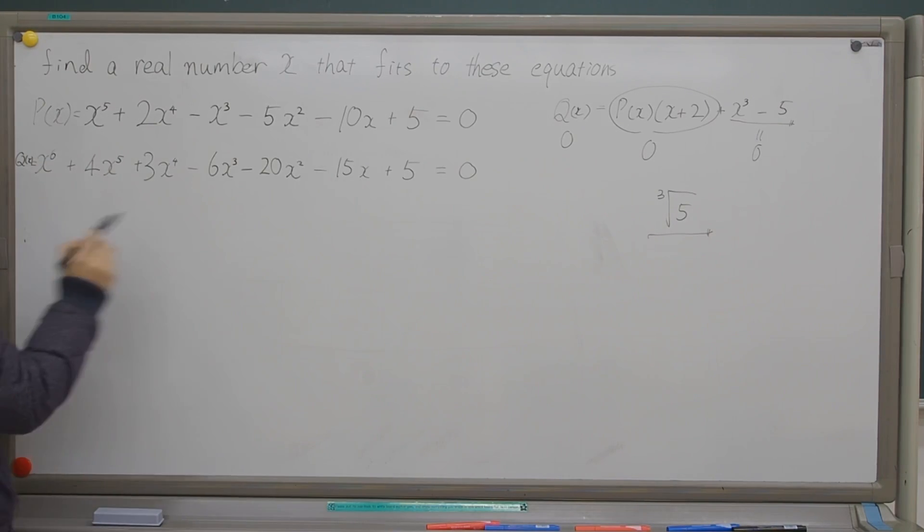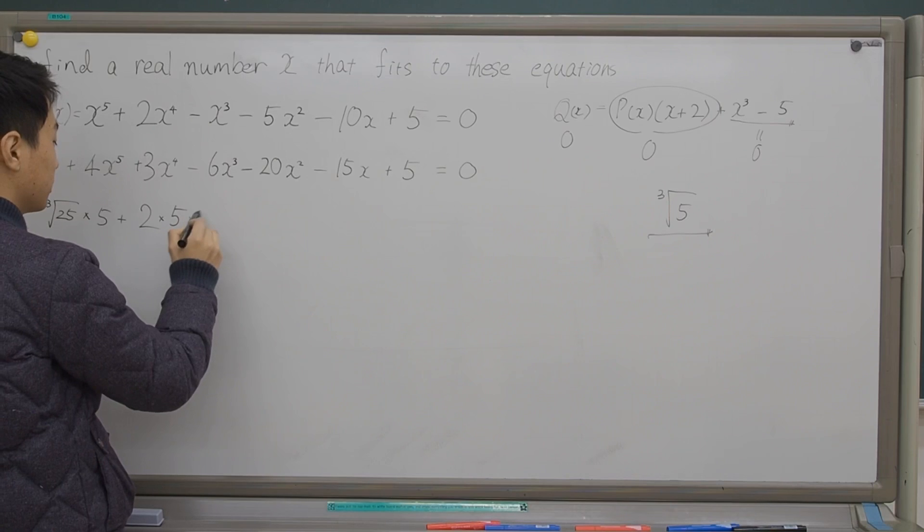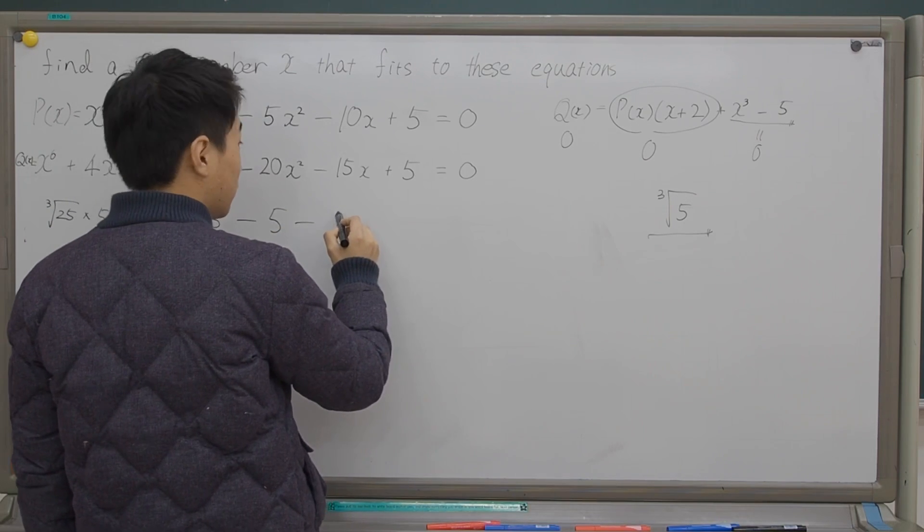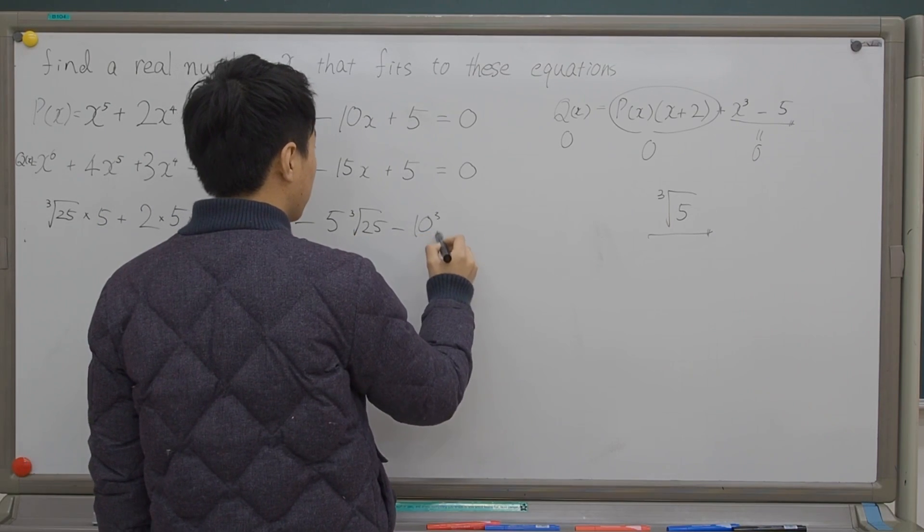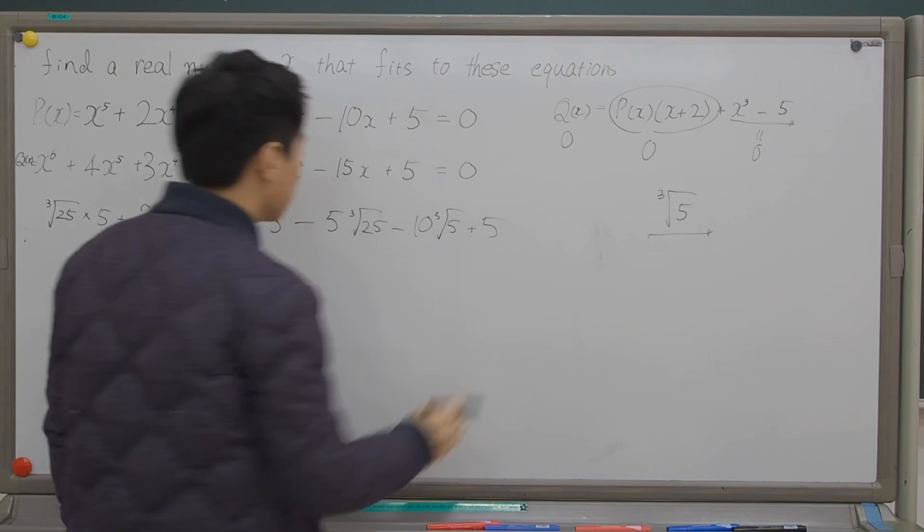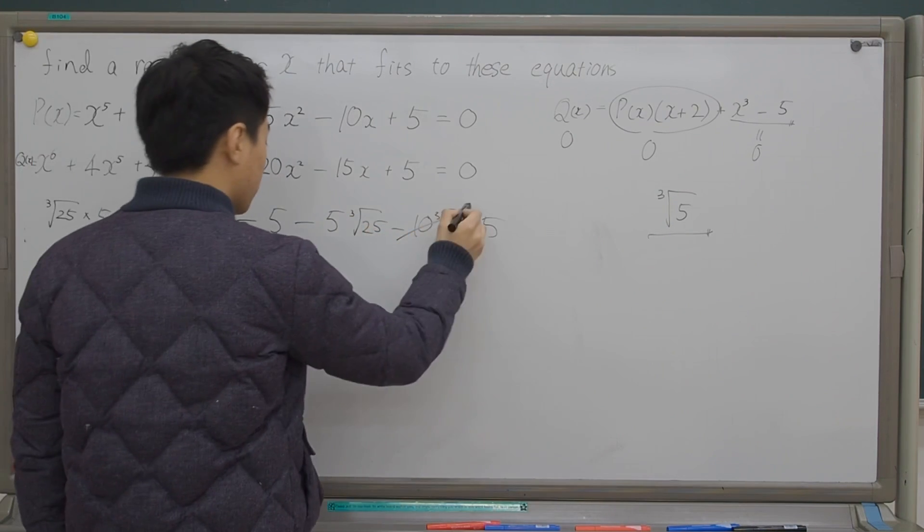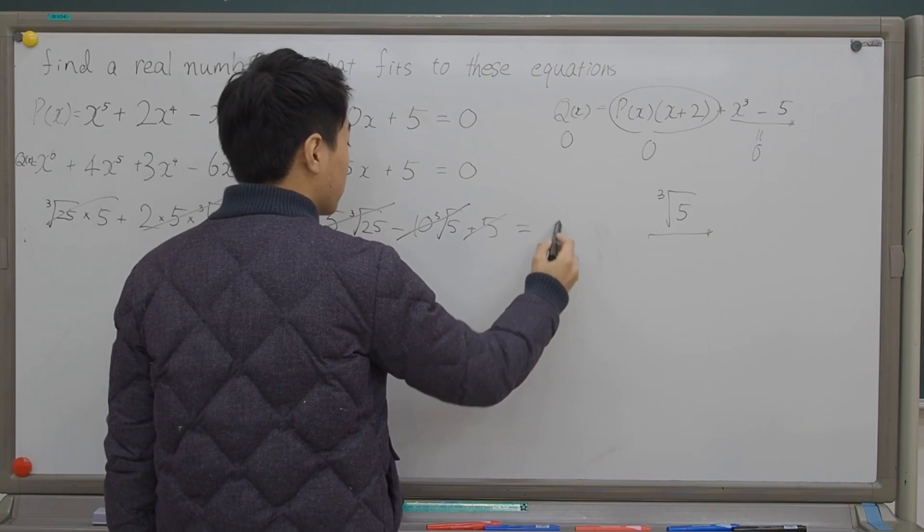So okay, let's start from this one. What is it? The cube root of 25 times 5 plus 2 times 5 times the cube root of 25 minus 10 times the cube root of 5 plus 5. Does it make it zero? Okay, let's check it out. Okay, so 10 eliminates each other, this 5 eliminates each other, and then eliminates each other. Thank God, it's zero. Alright.